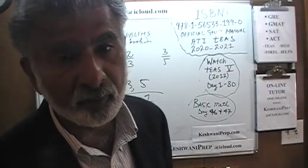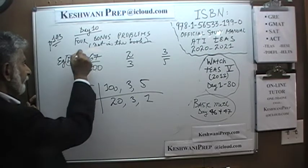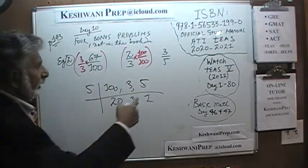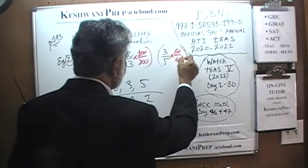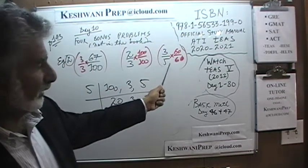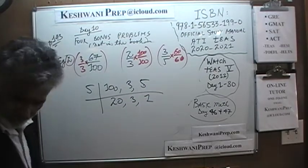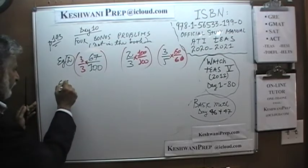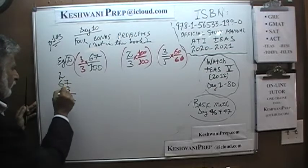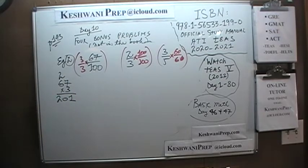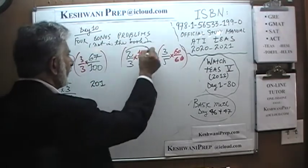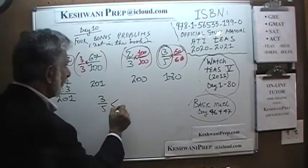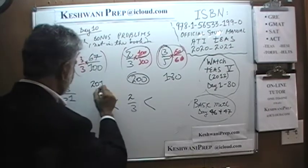If we can make all of them three hundred, we can compare the top because the bottom will be the same. Let's multiply sixty-seven over one-hundred by three over three — so it becomes three hundred on the bottom. Multiply two-thirds by one-hundred over one-hundred — now the bottom is three hundred. And for three-fifths, multiply by sixty over sixty, because sixty times five is three hundred. Now we can compare the tops: sixty-seven times three is two-hundred-and-one, two-thirds gives us two-hundred, and three-fifths gives us one-eighty. So three-fifths is the smallest, two-thirds is in the middle, and sixty-seven over one-hundred is the largest.